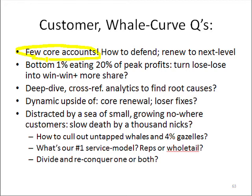One customer might be generating 25 percent of their operating profit, so we'd hate to lose them. Rather than being defensive, let's be offensive — how do we take our value proposition for these customers to the next level, understand them more deeply, and build a bigger multi-strand rope between all our people and their key people, so that if one strand pops, we still keep the relationship.